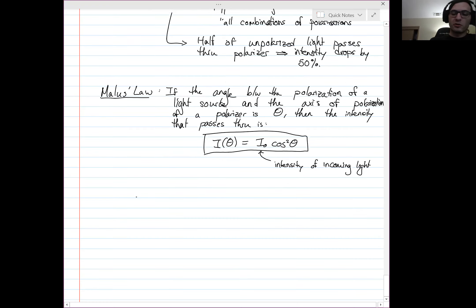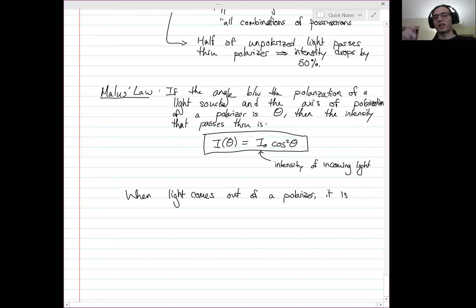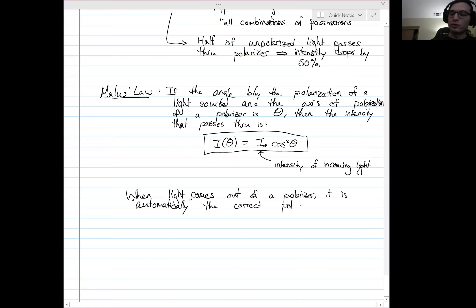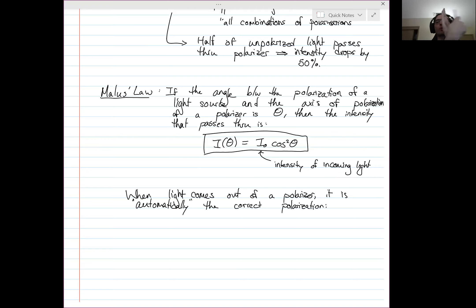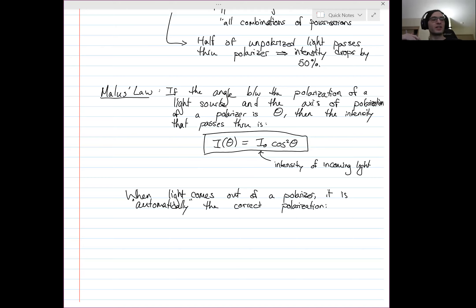An important point: when light comes out of a polarizer, it is automatically the correct polarization. The only light that makes it through is light with the correct polarization. So the light that comes out of a polarizer is polarized. If you take a light bulb and shine it through a polarizing filter, the light that comes out will be polarized in the same direction as the polarizing filter — it filters out everything not polarized in the correct direction.